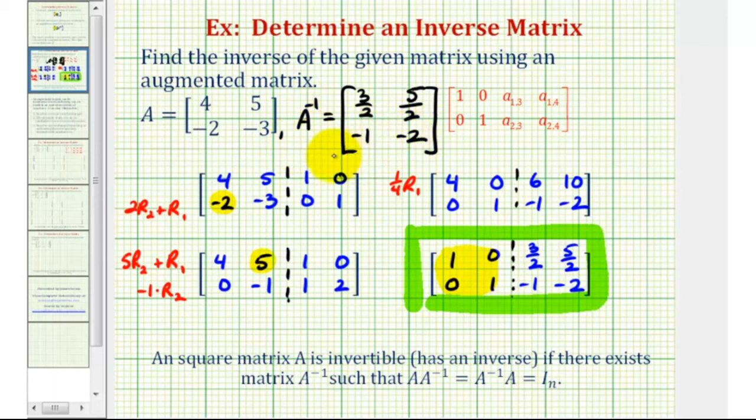And since this is the inverse of matrix A, this means that A times A inverse would be equal to A inverse times A, which would be equal to a 2 by 2 identity matrix.